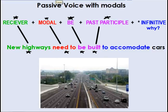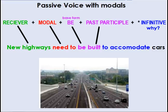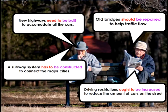Let's remember something important. Modal verbs are special because the verb after them is always in the base form. So when I use 'need to' as my modal, I use 'be' in the base form — I'm not conjugating it. Looking at our first example: 'New highways need to be built to accommodate all the cars.' 'Need to' is my modal, and I'm using the passive voice.